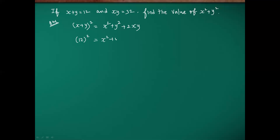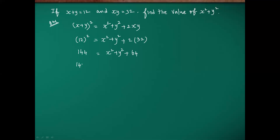They asked to find x square plus y square, so: 12 square equals x square plus y square plus 2 into xy. The xy value given is 32, so 2 into 32 is 64. And 12 square is 144. So 144 equals x square plus y square plus 64.